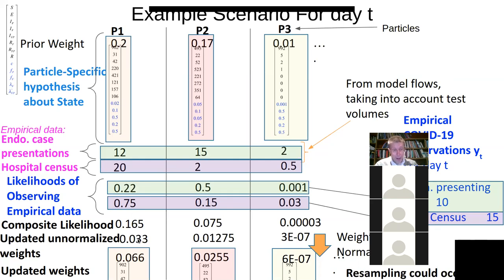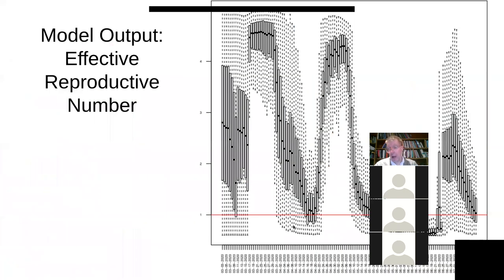The same thing happens with all the other particles. Some might've predicted something much closer to the data — like a 0.5 that was bang on the mark — but another particle was out to lunch, out in outer space, and it's going to be updated with a very, very small likelihood and have a very small weight. This particle is ripe to not survive in the survival of the fittest.